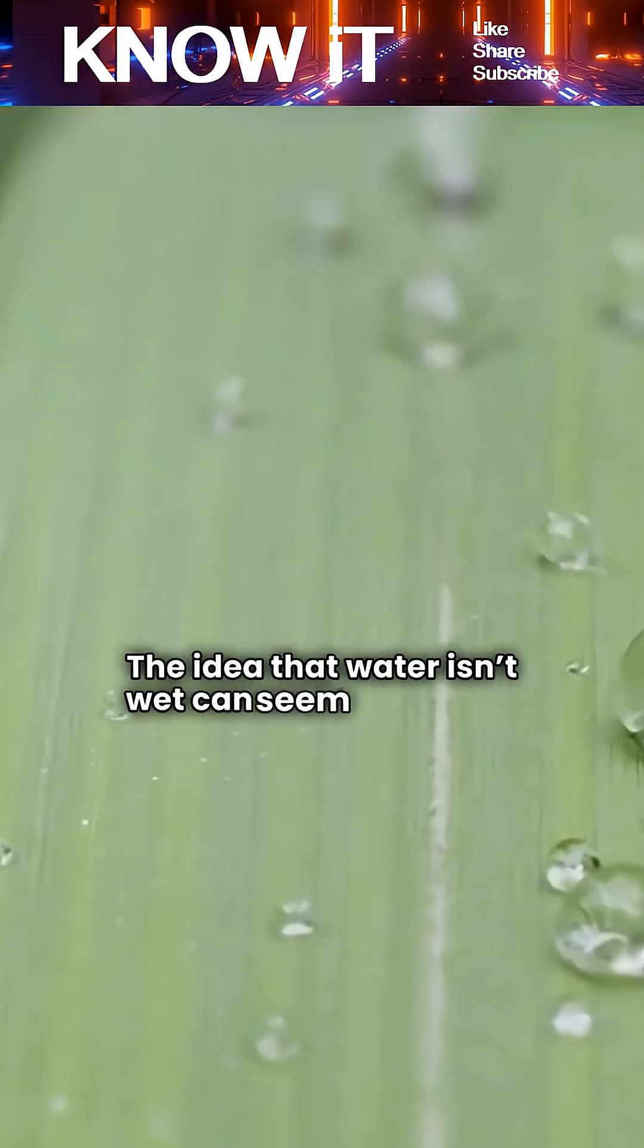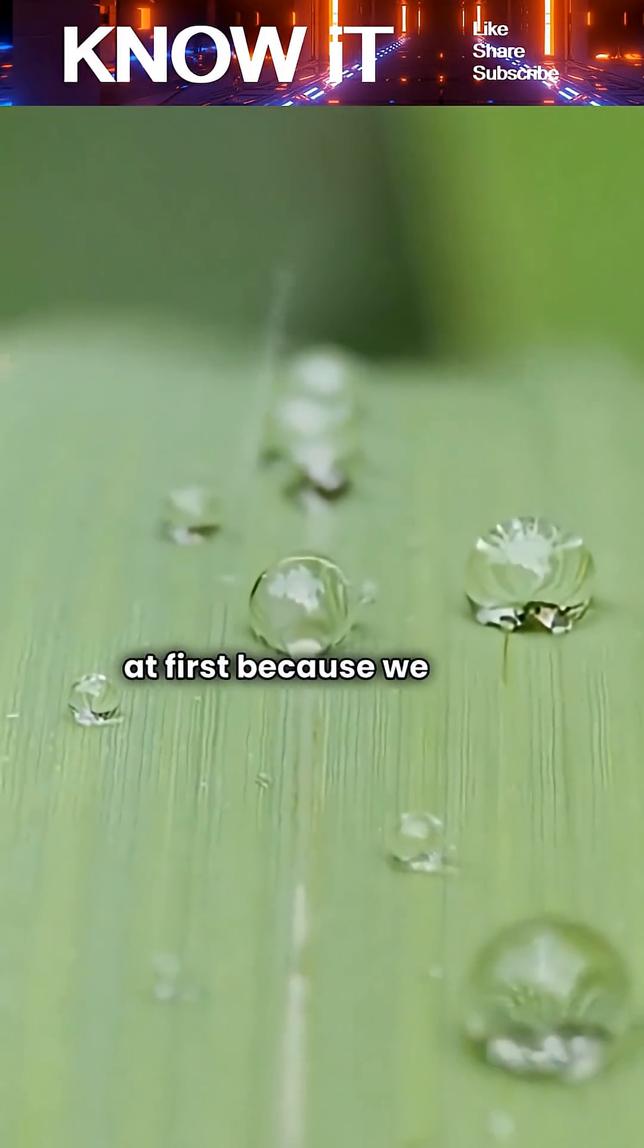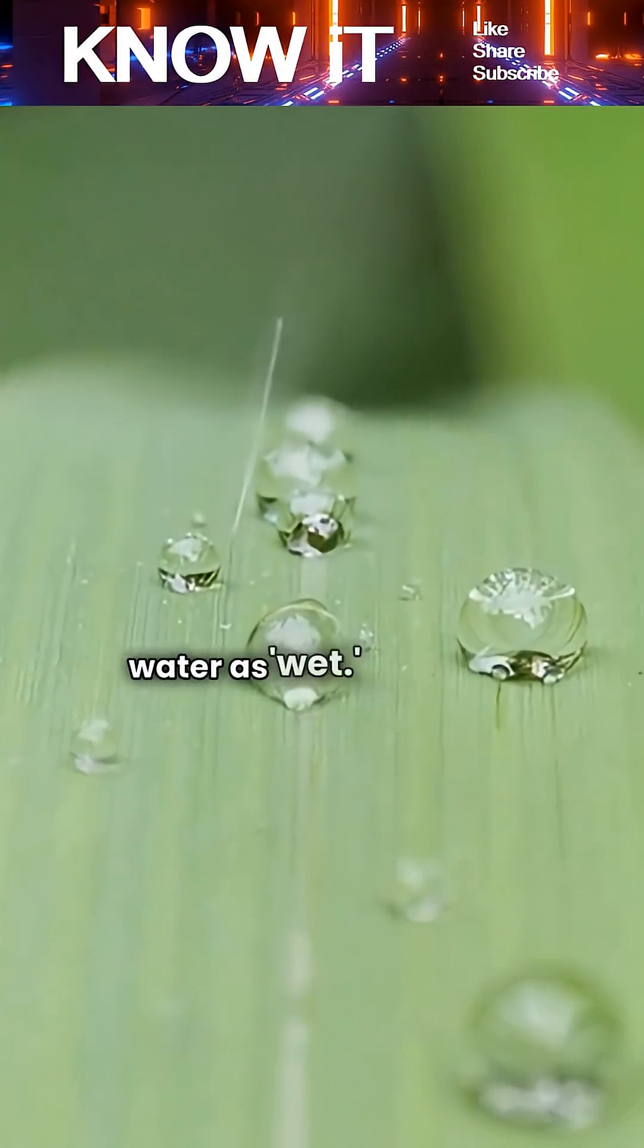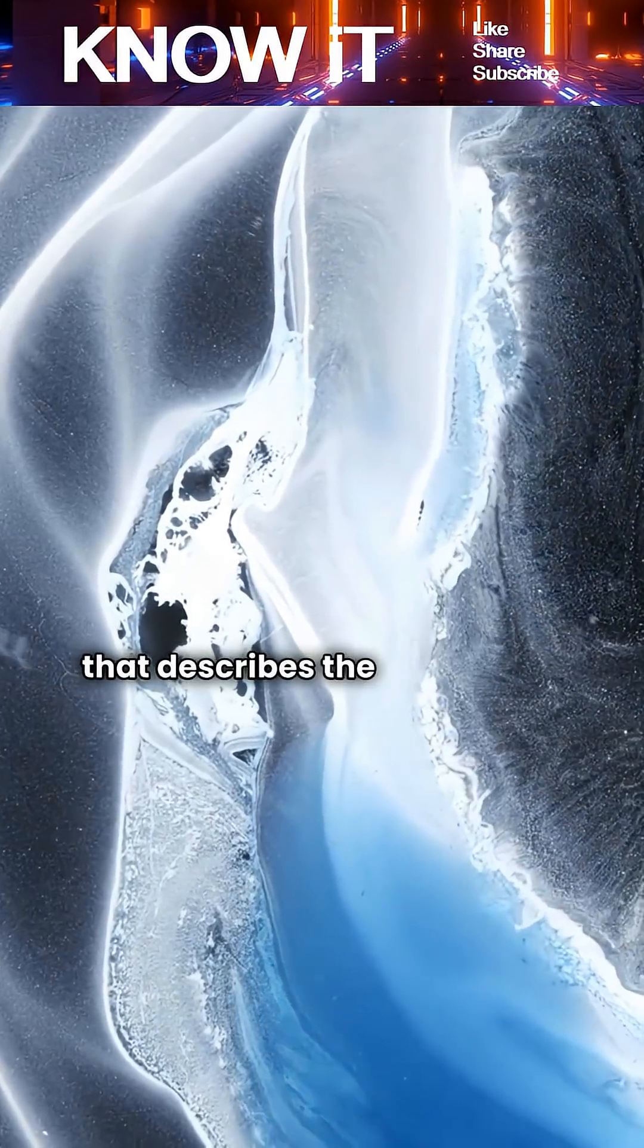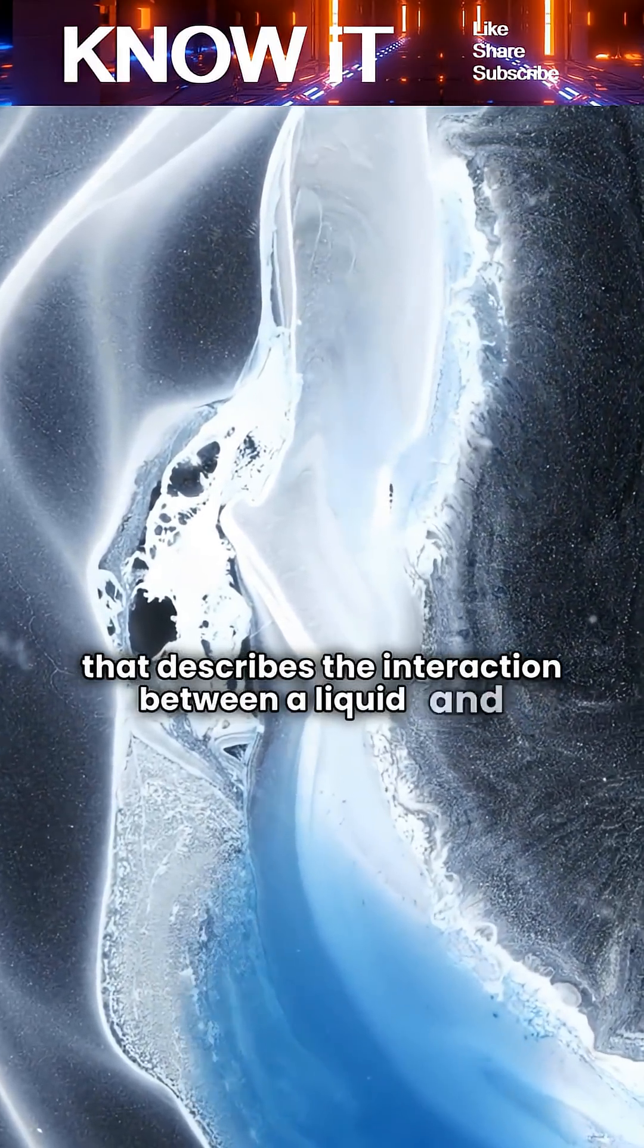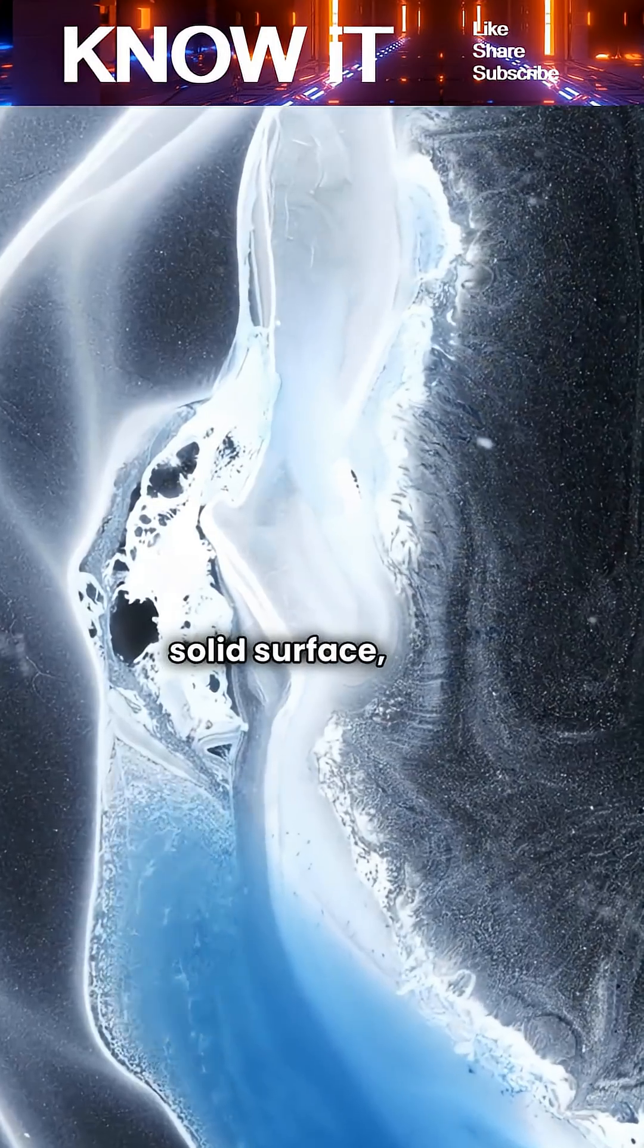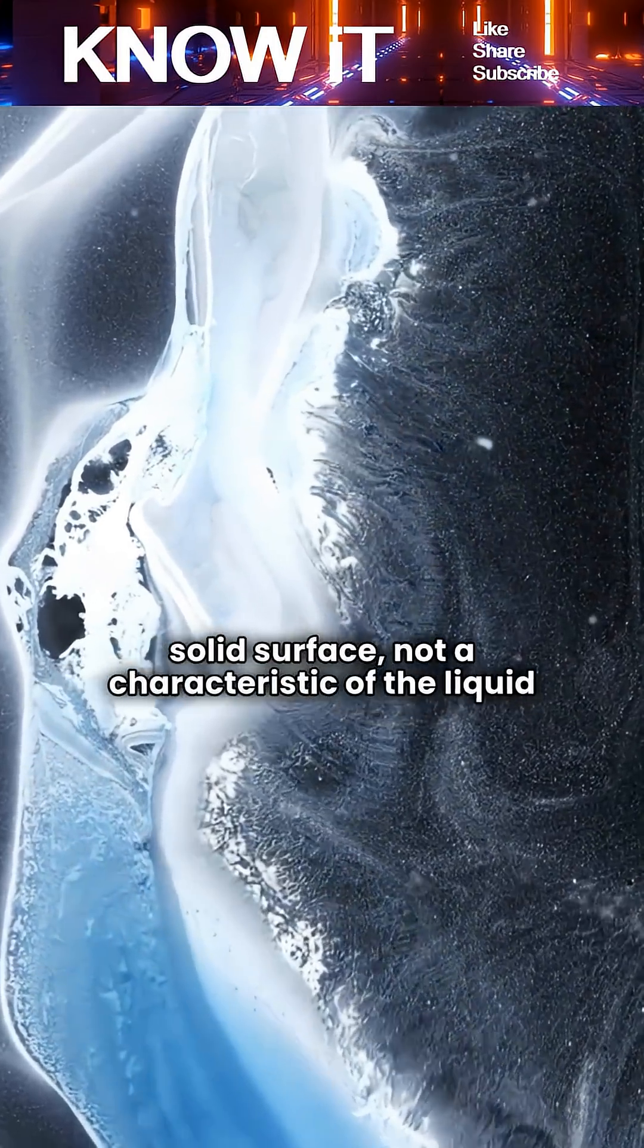The idea that water isn't wet can seem confusing at first because we often describe things that touch water as wet. However, wetness is actually a property that describes the interaction between a liquid and a solid surface, not a characteristic of the liquid itself.